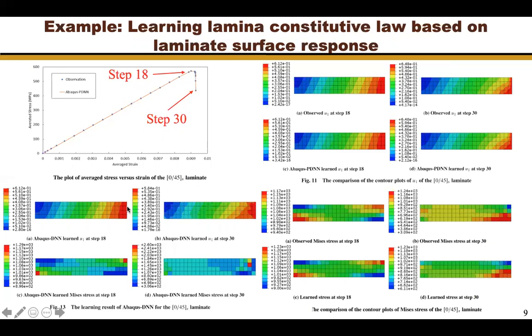Additionally, we present the results learned without applying the positive definite constraint. The results show that Abaqus-DNN can learn the constitutive law when the material is slightly damaged. However, Abaqus-DNN failed to learn the constitutive law of severely damaged material.